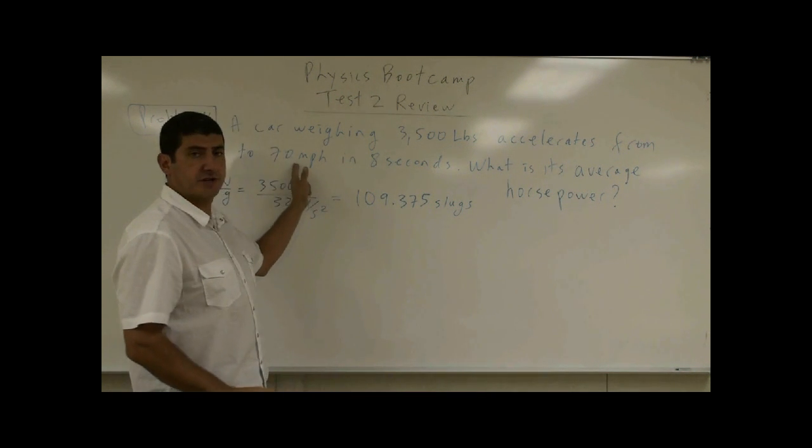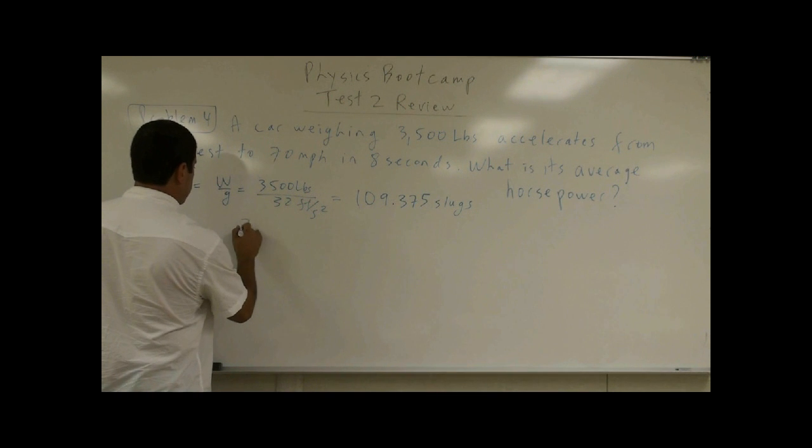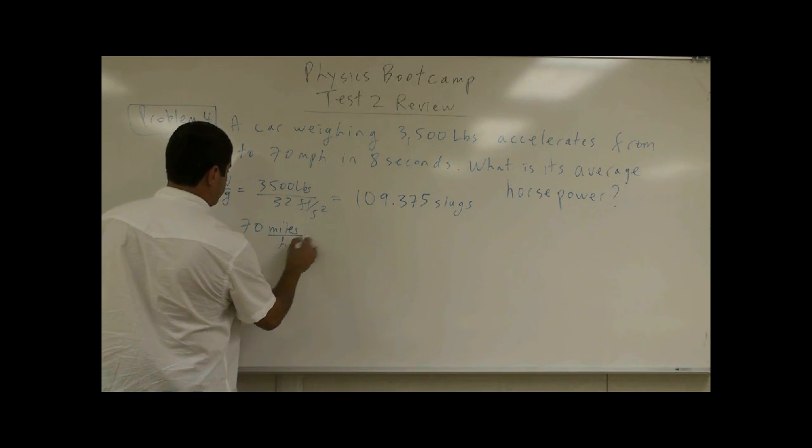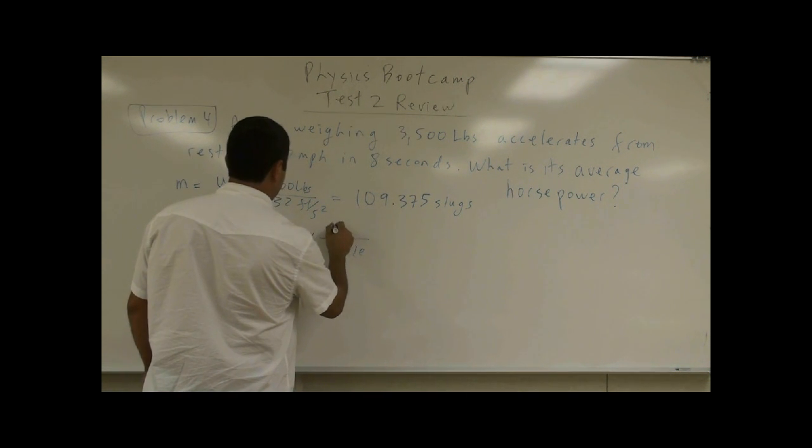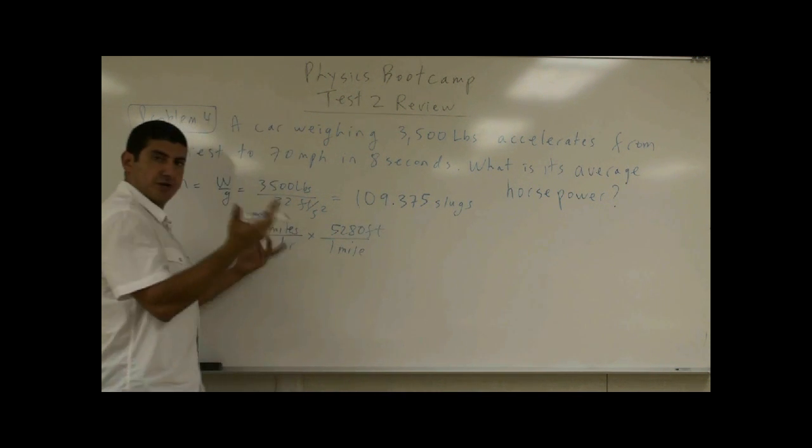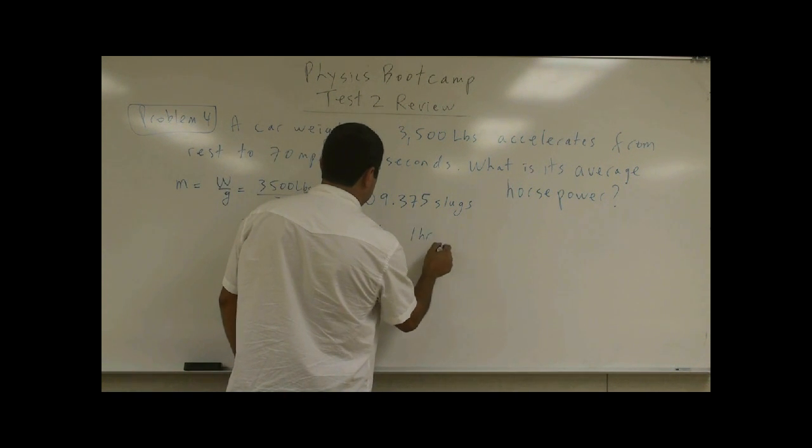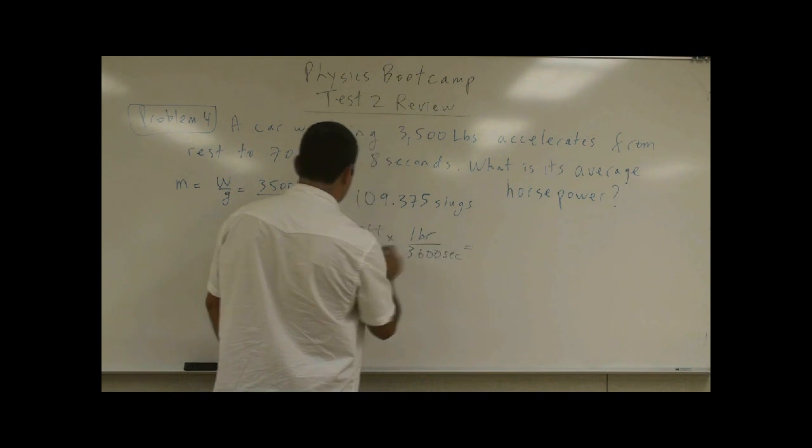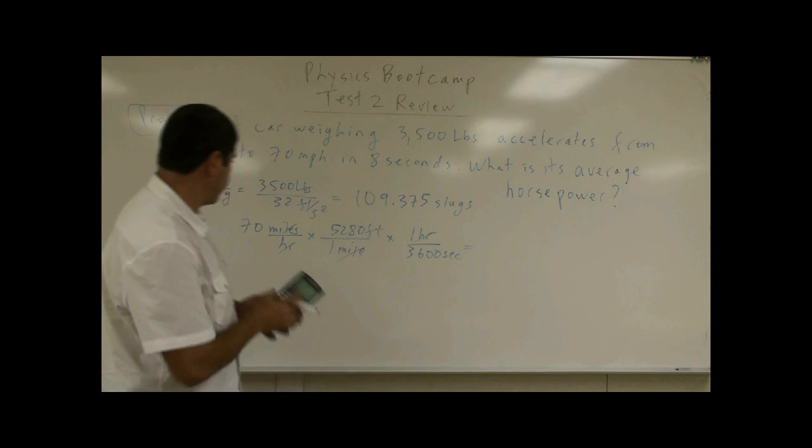The other thing that we want to do is convert miles per hour to feet per second. So 70 miles per hour. One mile is 5,280 feet. It's kind of a weird conversion, but that's the way it is. One mile is 5,280 feet. One hour is 3,600 seconds. Hour cancels hour, mile cancels mile. Let's calculate what that's going to give us.